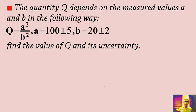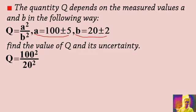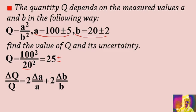Another example. The quantity q depends on the measured values a and b in the following way: q is equal to a squared over b squared. The values and their uncertainties are given. Find the value of q and its uncertainty. The value of q is found by substituting the values. Pay attention that here the minimum number of significant figures is 2, and the answer automatically has only two significant figures — it's 25. Now, let's find the fractional uncertainty and then the absolute uncertainty for q. Delta q over q is equal to 2 times delta a over a plus 2 times delta b over b, according to the previous examples.